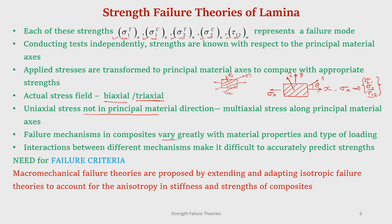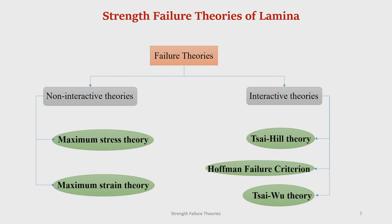Failure mechanisms in composites vary greatly with material properties and type of loading. A failure may be because of the combination of all these different modes, and interaction between different mechanisms makes it really difficult to accurately predict the strengths; therefore, a failure criterion is actually needed. The macro mechanical failure theories are proposed by extending and adopting the failure theories applied to isotropic material, but taking into account the anisotropy in stiffness and strength of the composite, while the philosophy remains the same.